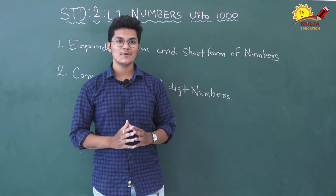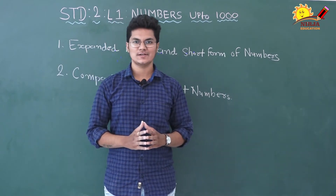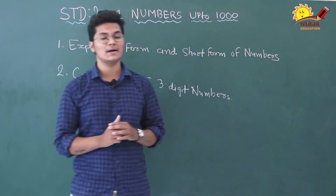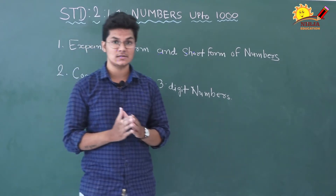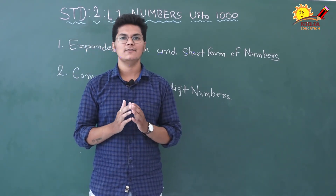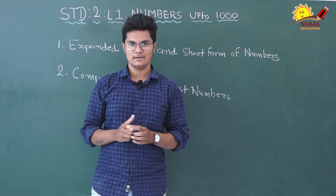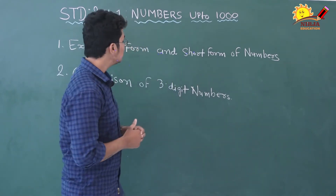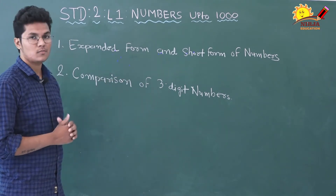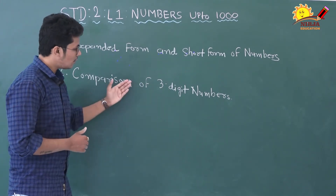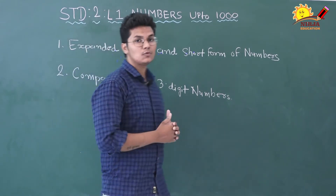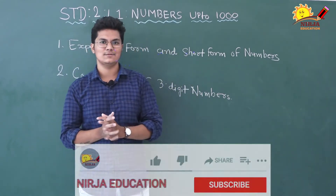Hello everyone, welcome back to Neja Education. So, we studied in the first chapter: 3-digit numbers, reading numbers on abacus, and face value and place value. Ab is video mein hum padhenge expanded form and short form of numbers, and comparison of 3-digit numbers. So, about these two topics we are going to learn in this video.